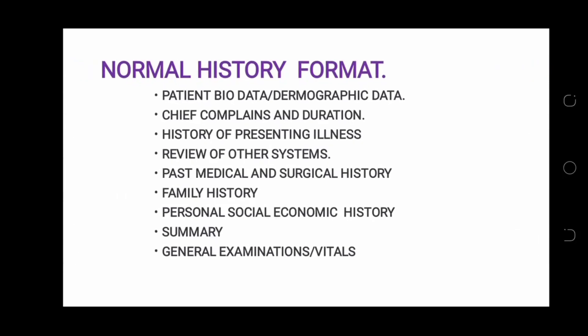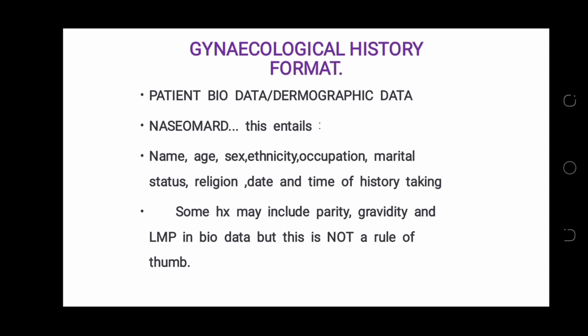The normal history format entails: patient bio data or demographic data, chief complaints and duration, history of presenting illness, review of other systems, past medical and surgical history, family history, personal socioeconomic history, summary, general examination and vitals, and you may proceed to systemic examination.